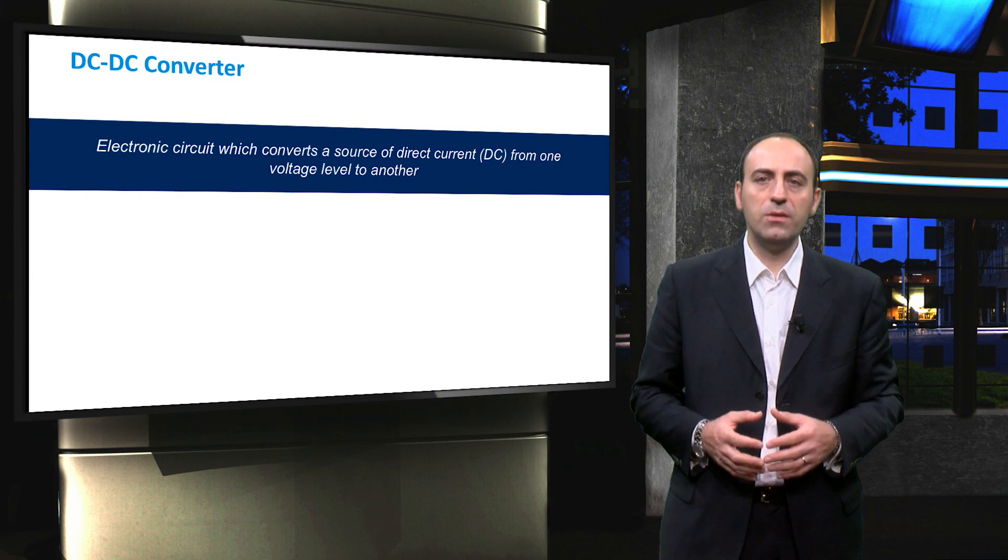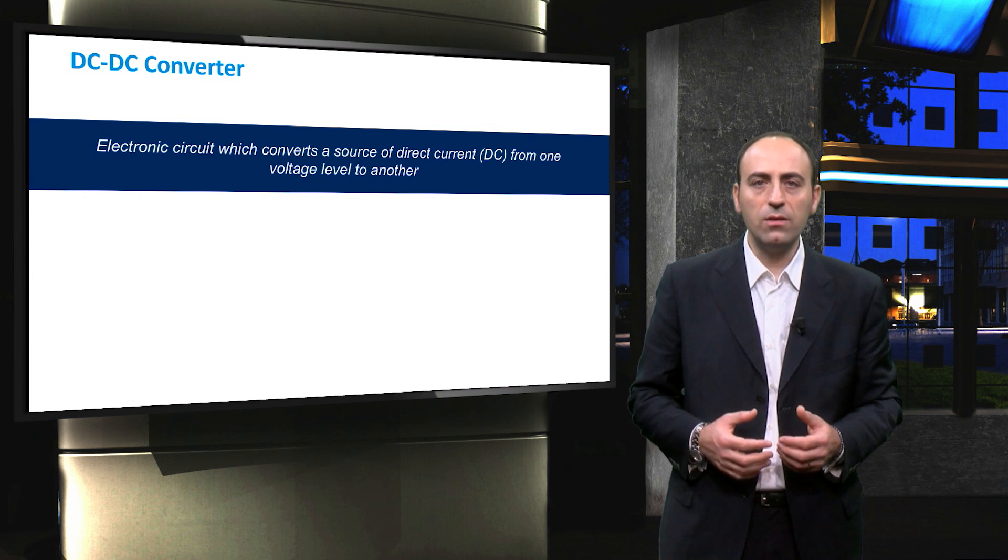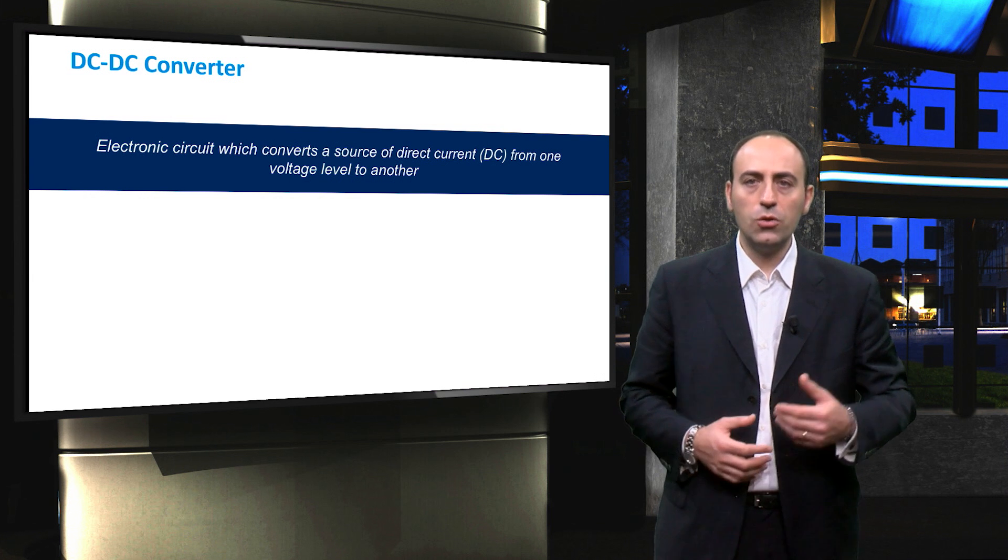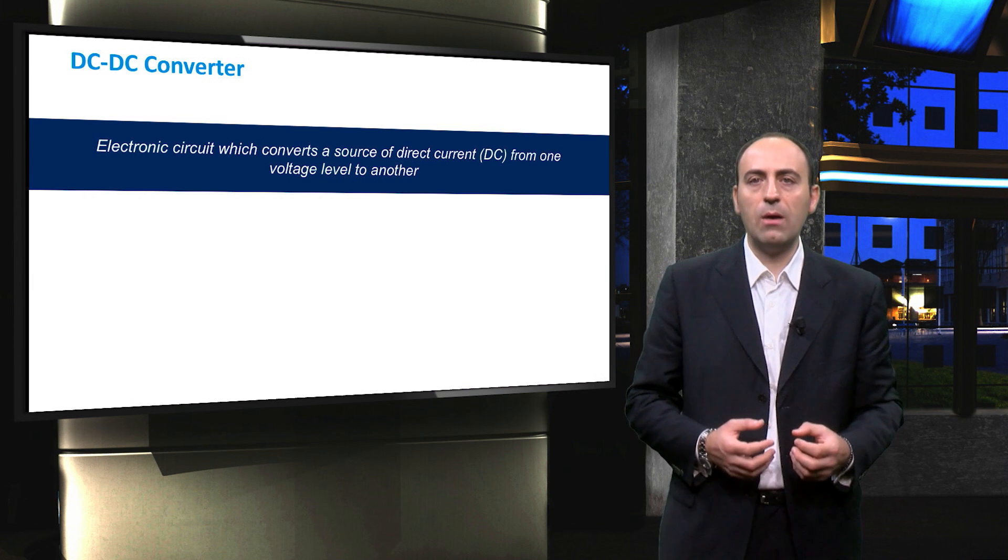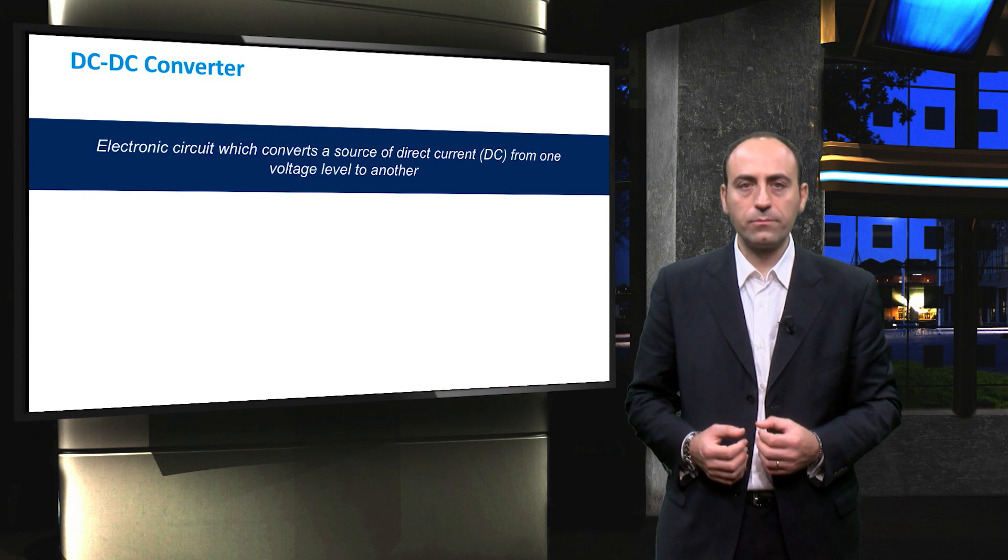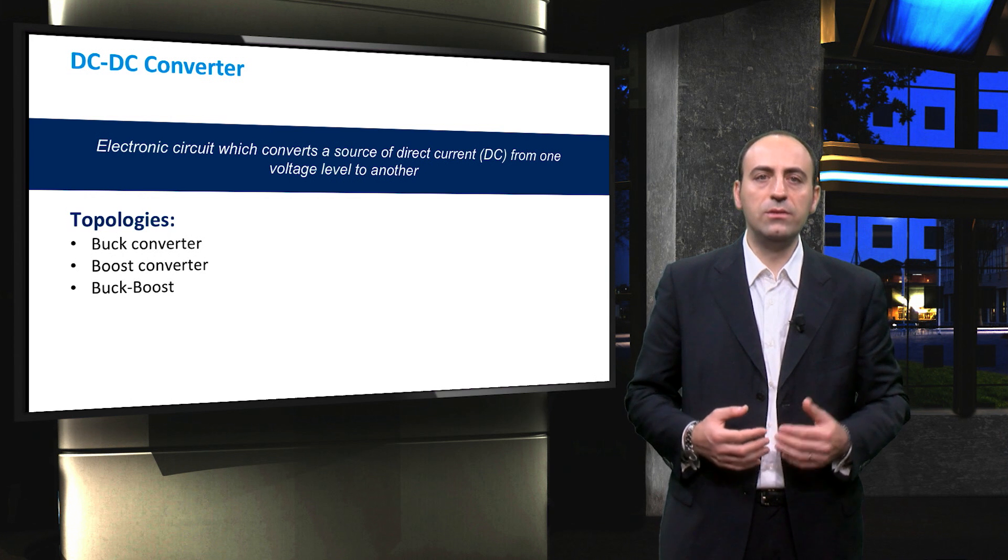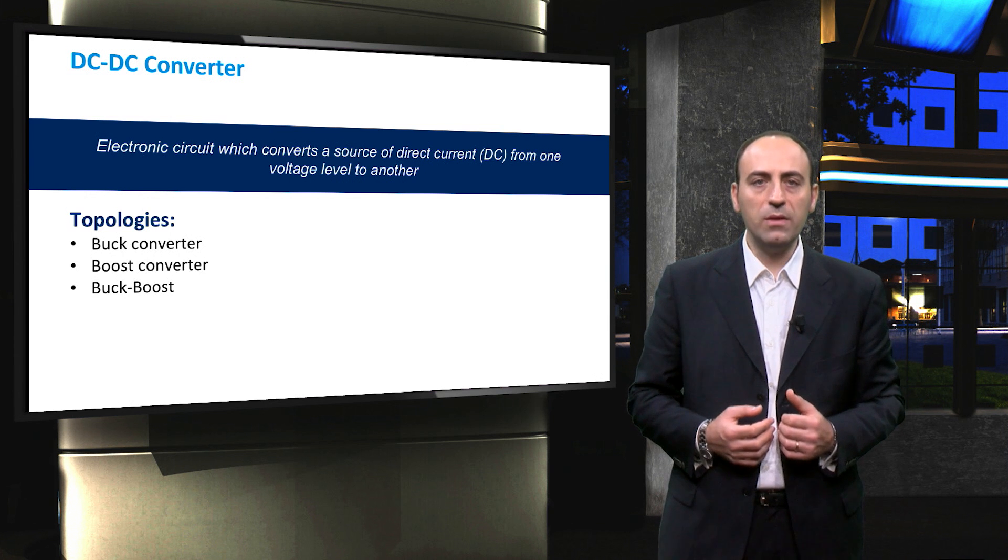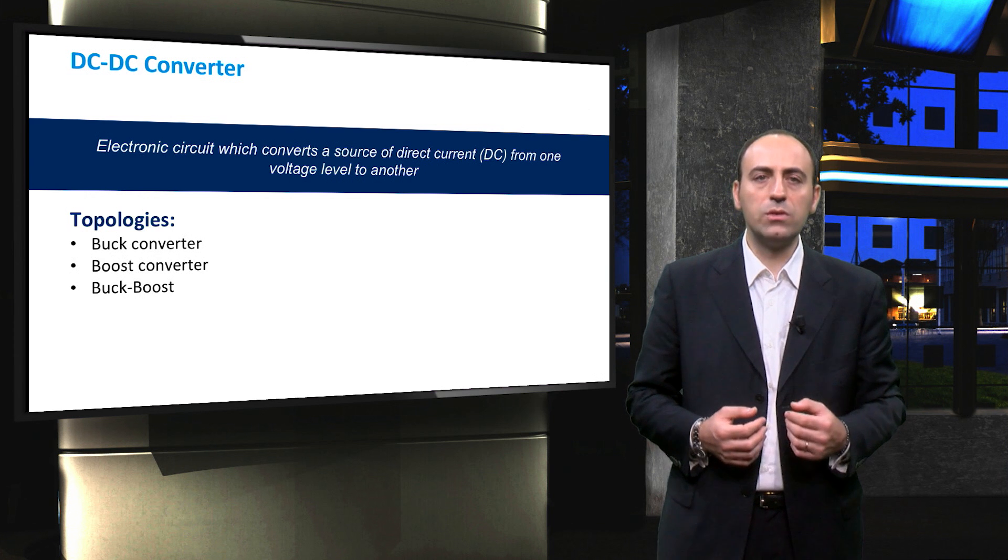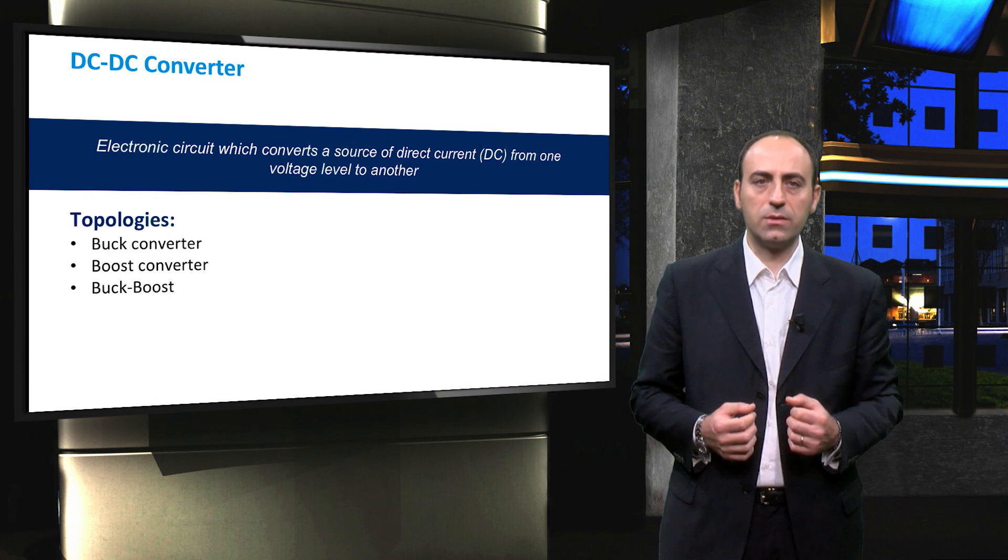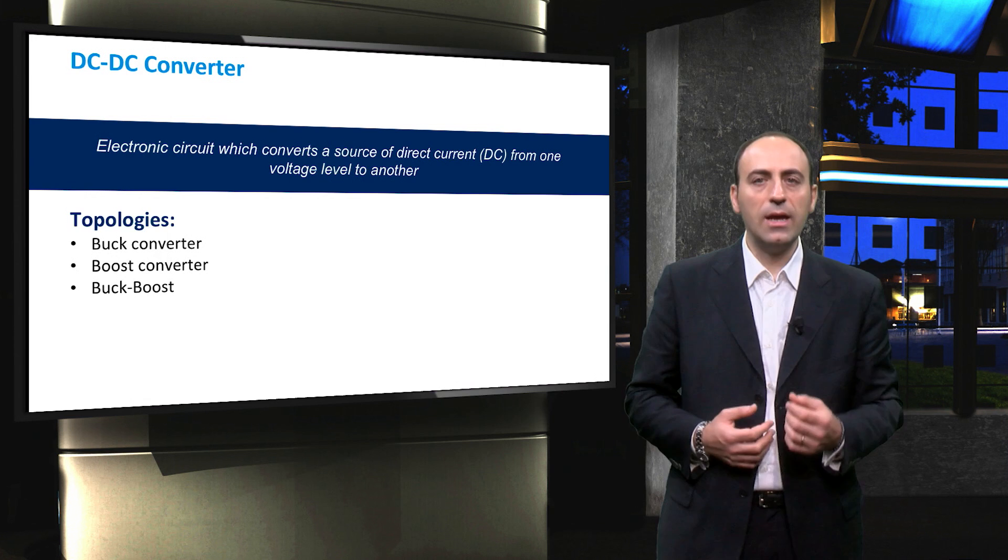To conclude this video, the DC-DC converter has been defined as an electronic circuit that converts a source of direct current from one voltage level to another, and the objective of an ideal converter is to draw the maximum power from the panel to supply it to the load. There exist three different types of converters: Buck converter that decreases the voltage of the PV side, boost converter that increases the voltage, and Buck boost which includes both previous cases. In the next videos, we shall explain more in detail these three types of converters and their components.